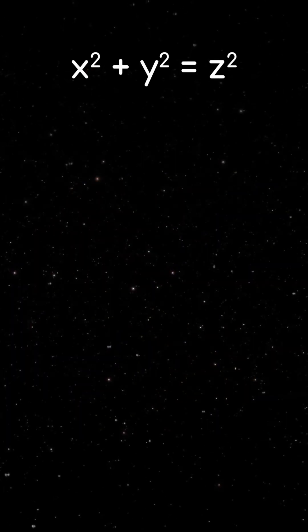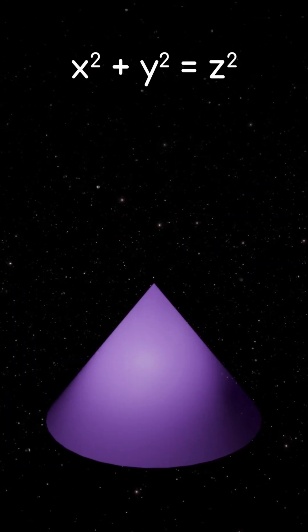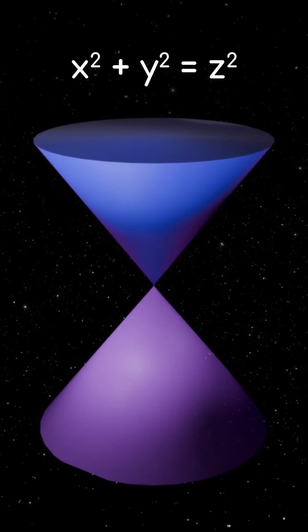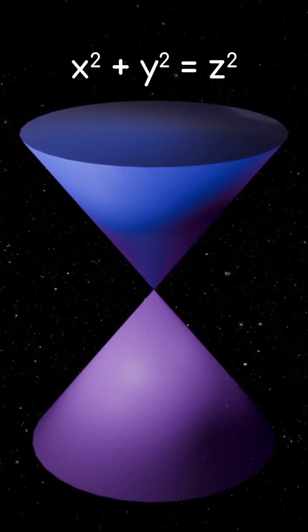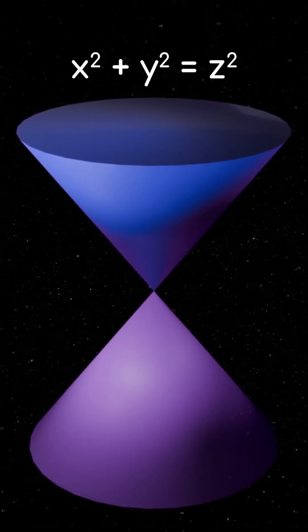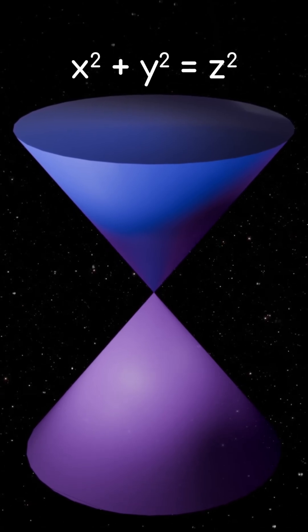You see, a mathematical cone has two halves, one that points up and one that points down, connected at their tips. And what we think of as cones in the real world are actually just chopped up pieces of the full mathematical cone.